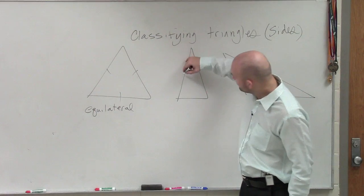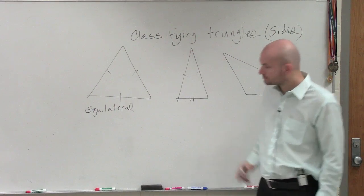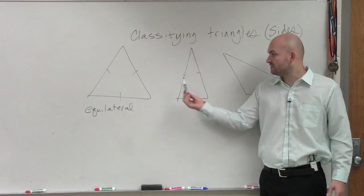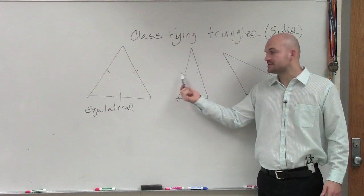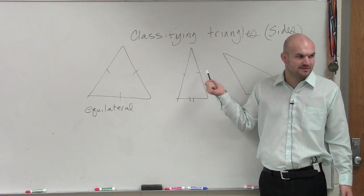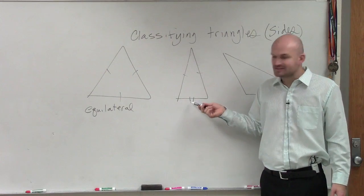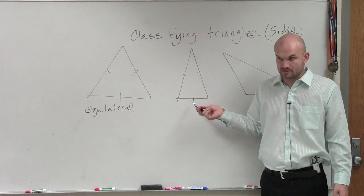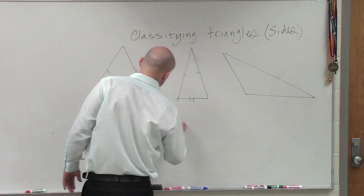If only two of them are equal, notice how we differentiate when they're equivalent. If they're the same measurement, we leave them with the same number of tick marks. If it's different, we give them a different number of tick marks. This is what we call an isosceles.